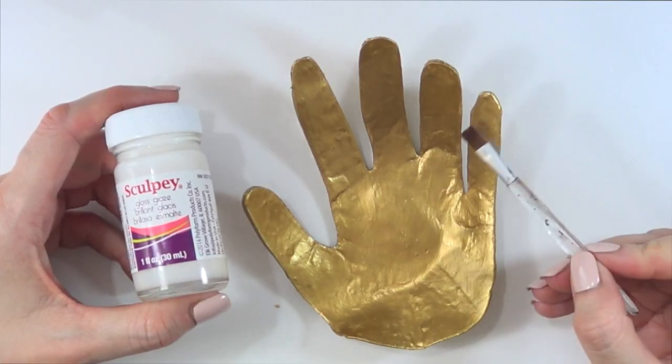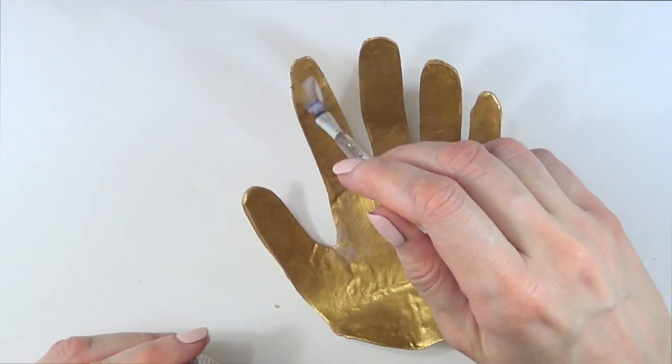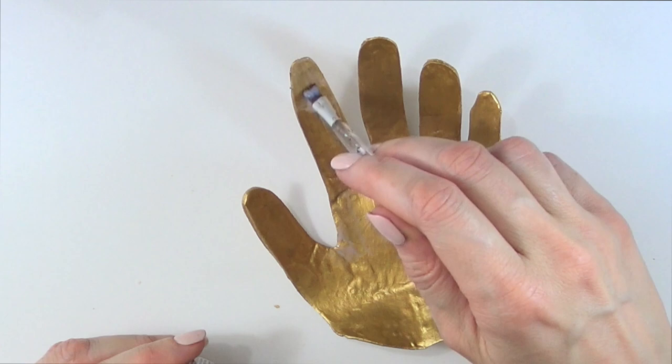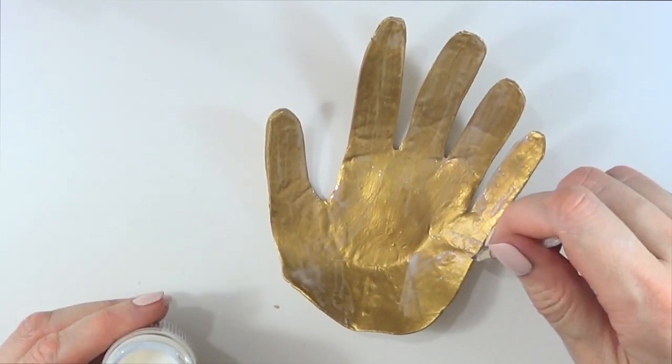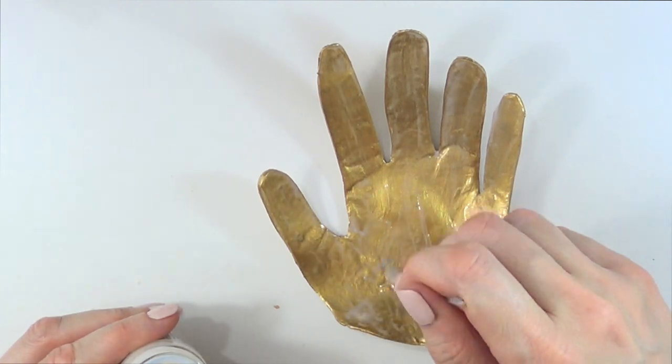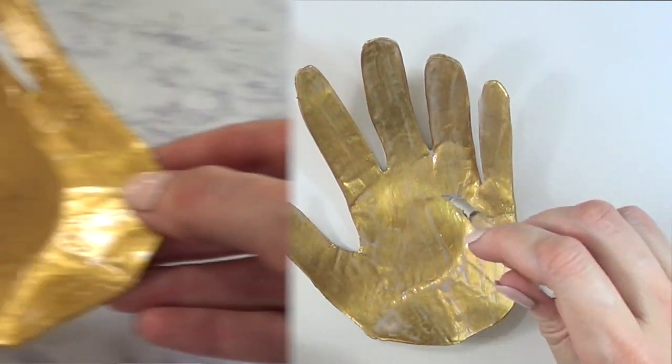I'm going to wait for that to dry. Then I'm taking this Sculpey gloss and a brush. I'm adding one coat of this because I want this to be nice and shiny. Looks white in here, but when it dries, it dries glossy and translucent.